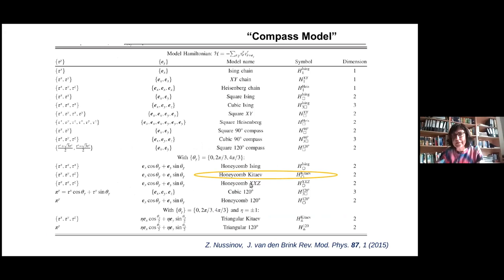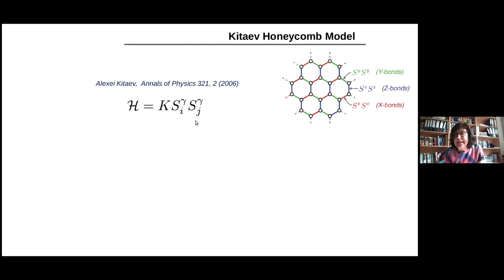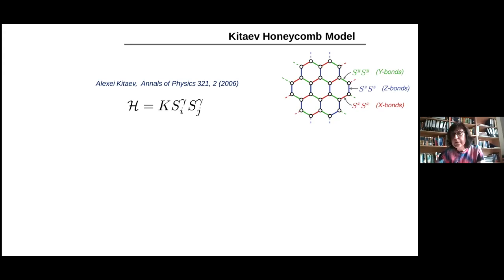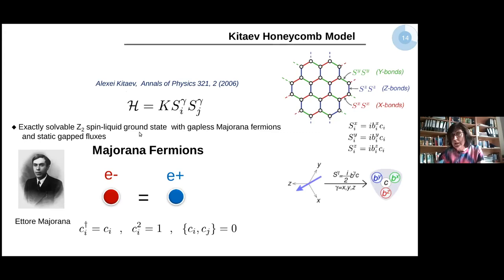The honeycomb Kitaev model is an Ising-like, nearest-neighbor, bond-dependent model on a honeycomb lattice requiring C3-type symmetry. The idea is that you have a bond-dependent interaction: on the Z-bond you have SzSz, on the Y-bond SySy, and on the X-bond SxSx. This is a highly frustrated model because a center spin must interact with its top neighbor via the Z-component, its right neighbor via the Y-component, and its left neighbor via the X-component. Since the three spin components do not commute with each other, this is a highly frustrated model.